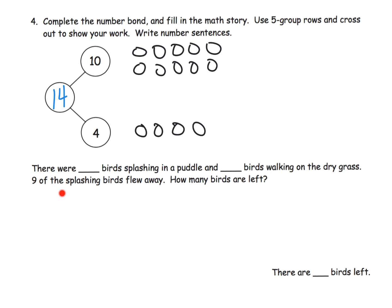Now let's go down here and read this question. It says there were some number of birds splashing in a puddle. And then some number of birds walking in the dry grass. Nine of the splashing birds. So since that's a big number, that means this 10 is the splashing. And then this is the walking. And it says, so let's get that written in. There were 10 birds splashing and 4 birds walking.